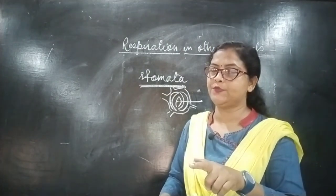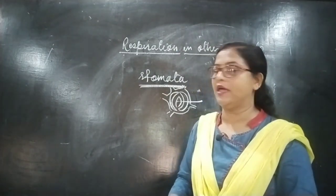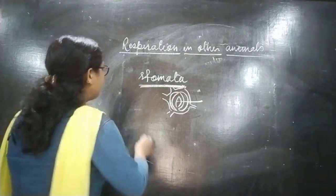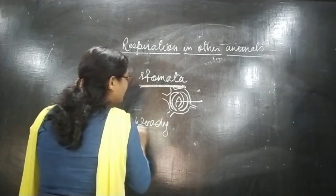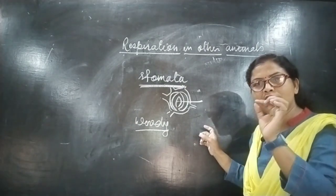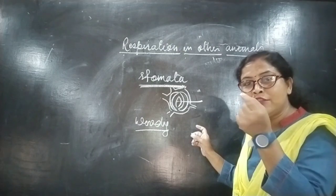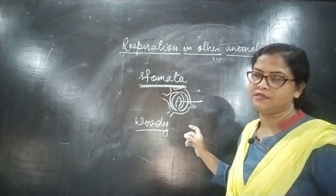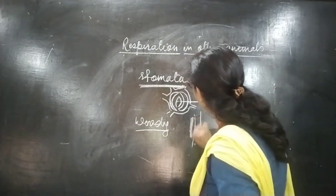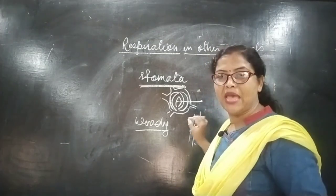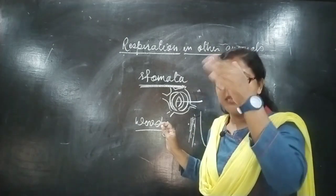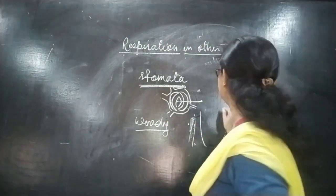Plants respire throughout the day and night through stomata in young stems and leaves. If the stem is woody, then they have lenticels. Lenticels are loosely packed dead cells in the form of tiny pores found in the bark of trees, and through these tiny holes the stem part of the plant respires.